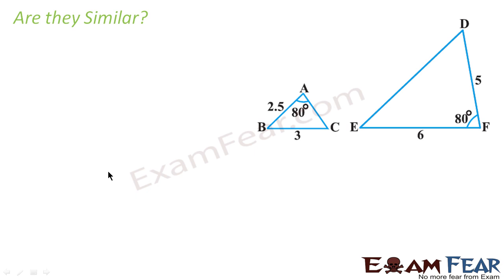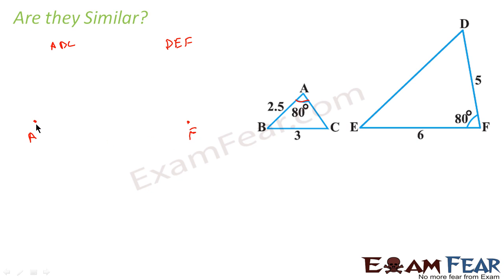Similar question: we have to tell whether these triangles are similar or not. Let us use a shortcut way. If you see, angle A and angle F are given as equal. So we know that angle A is equal to angle F. We will write this in the same orientation — for triangle ABC and the other triangle. Angle A is equal to angle F. Now if you see AB by DF, that is equal to 2.5 by 5.